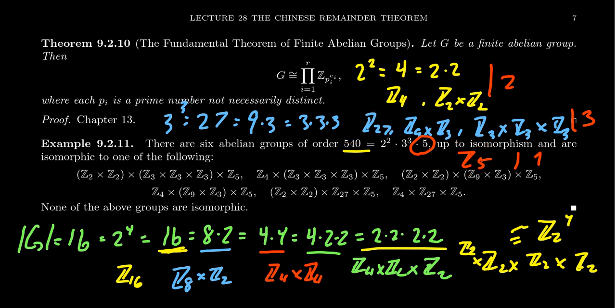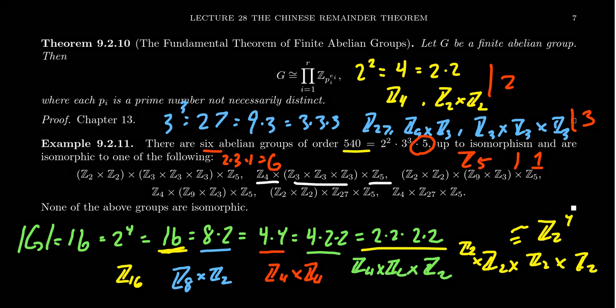So the total number of groups of order 540 is going to equal 2 times 3 times 1, which is 6. That's where we get these numbers from. You have all these possibilities. And so let's look at them really quick. One option is you take Z2 squared times Z3 cubed times Z5. You could switch up the 2 group, and you get Z4 times Z3 cubed times Z5. That's the second one.